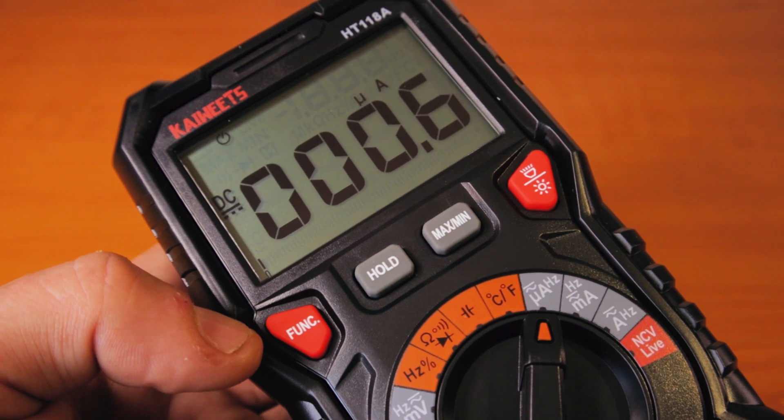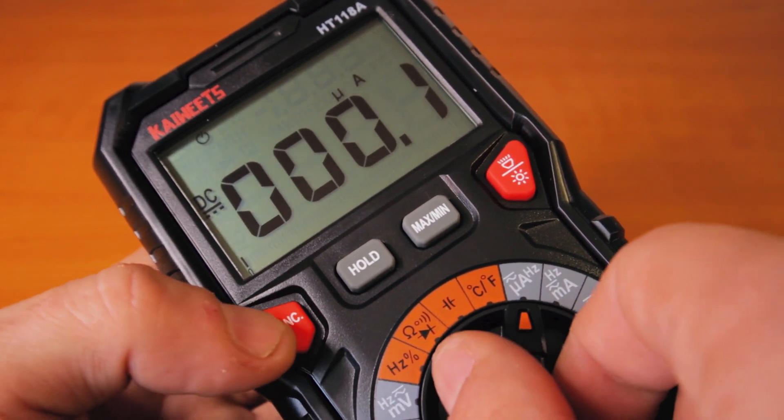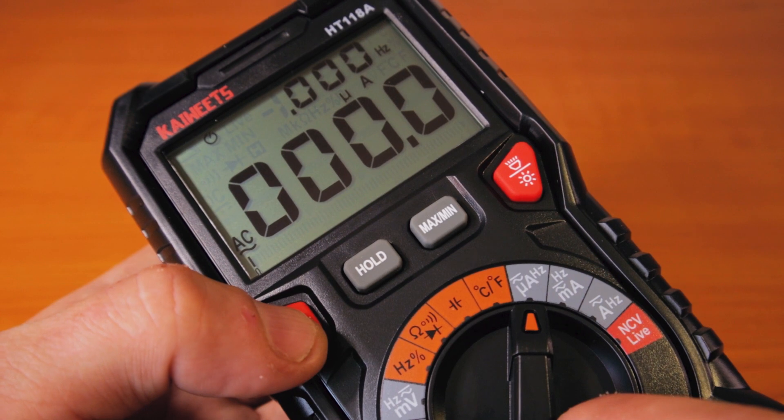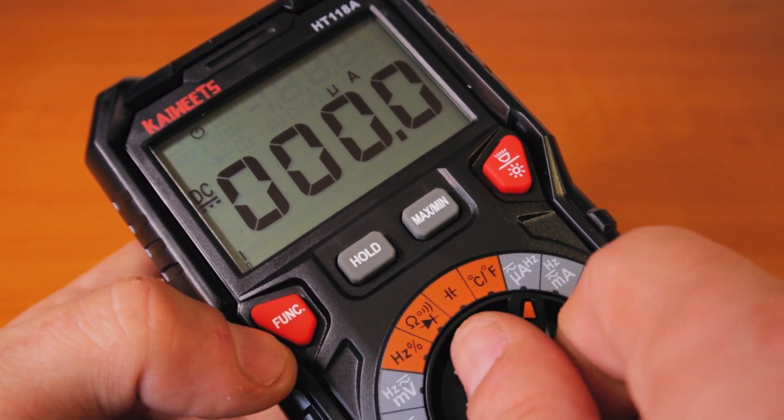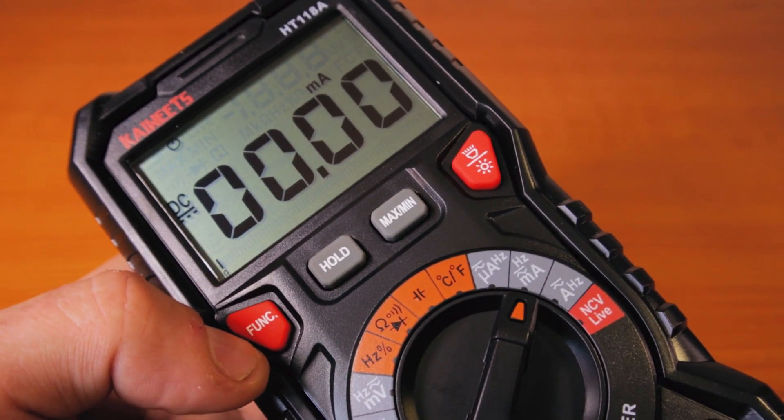This one is measuring microamperes for DC and AC. We have two different functions. Here we have milliamps and amps.